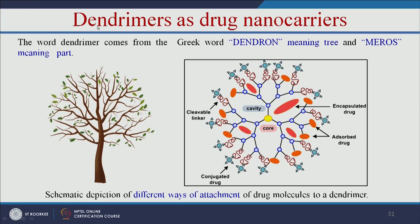Let us see another polymer — the dendrimer. The word dendrimer comes from the Greek word 'dendron' meaning tree and 'meros' meaning part, so it has a tree-like structure. The advantage of dendrimers is that we can load anti-cancer drugs in several locations: in the cavity as encapsulated drug, on the surface as adsorbed drug, or via a cleavable linker as conjugated drug. We can attach the drug to the dendrimer in different ways for anti-cancer therapy.